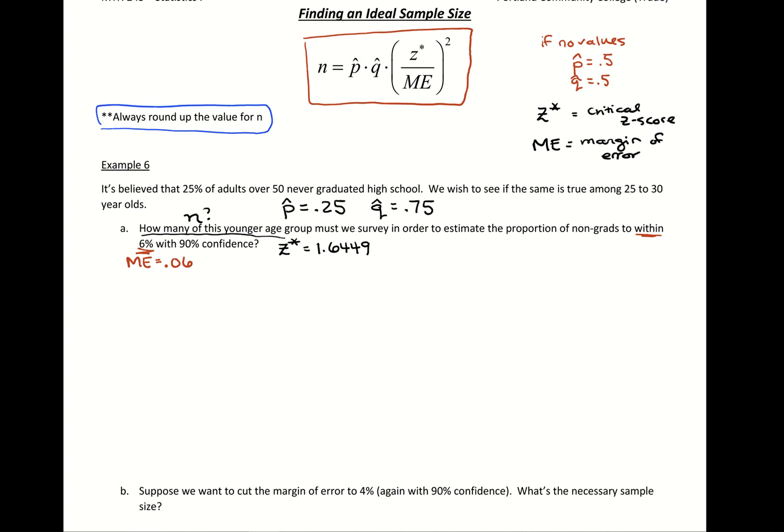So using our formula, calculating n, we take our sample proportion times 1 minus that sample proportion times, and then you're going to take z star, so the 1.6449 divided by our margin of error, and you want to square that division.